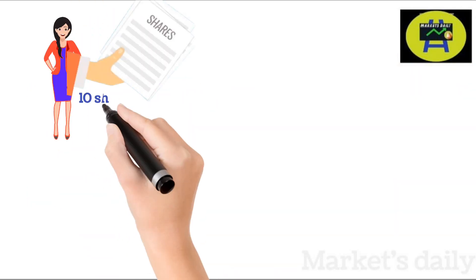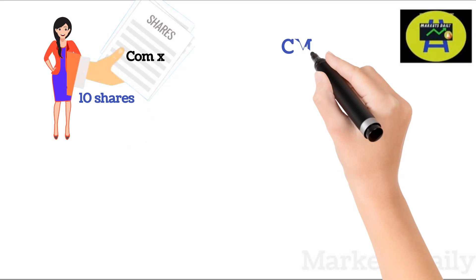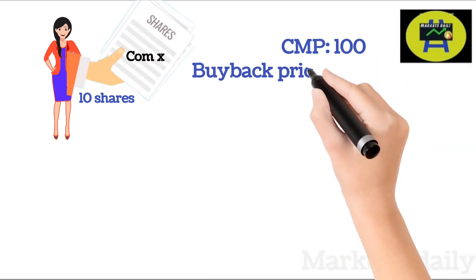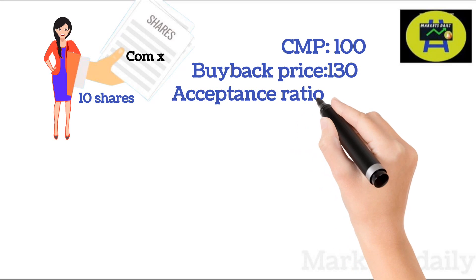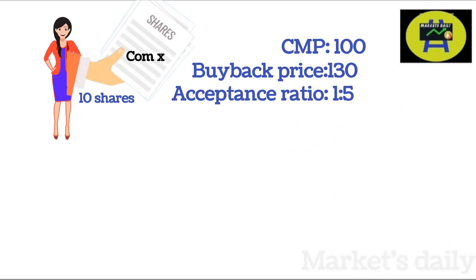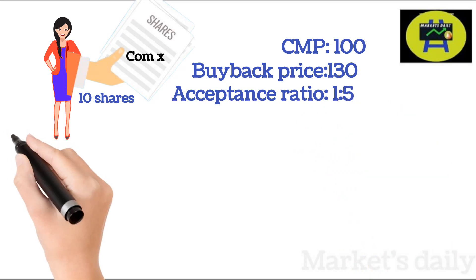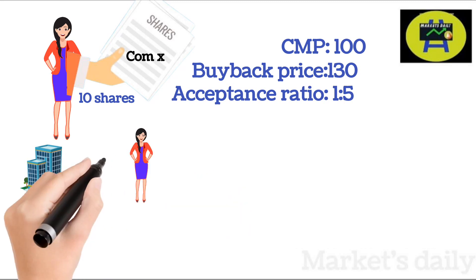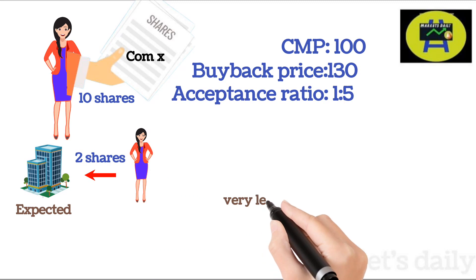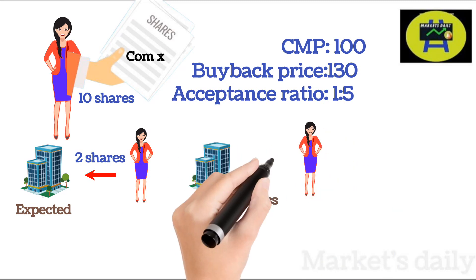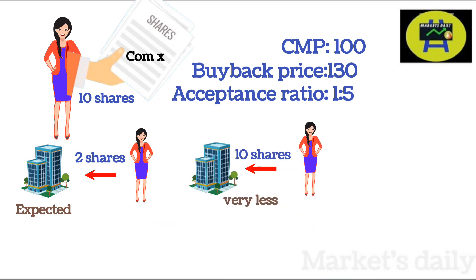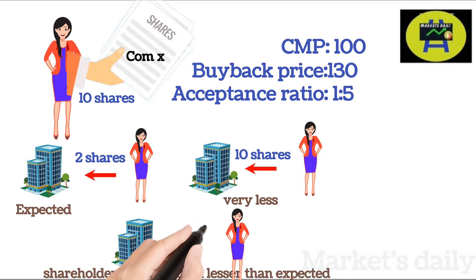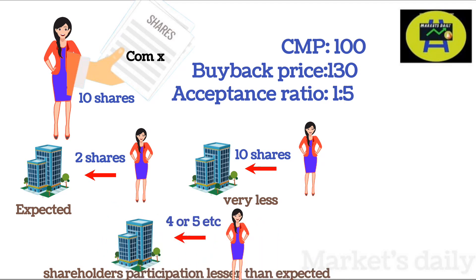In the example below, if you hold 10 shares of company X whose current market price is 100 rupees, their buyback price is 130 rupees, and the acceptance ratio is 1 to 5, and you apply for a buyback — what are the possibilities? The first possibility is the company buys 2 shares from you and transfers the amount to your bank account. The second possibility is if the number of shareholders willing to sell is very less, the company would buy all 10 shares from you. The third possibility is if the number of shareholders willing to sell is lesser than expected, then the company buys considerably more shares, i.e., 4 to 5 shares in this case.